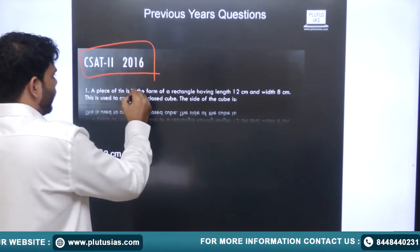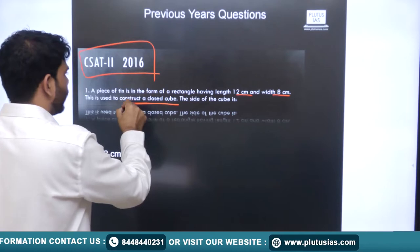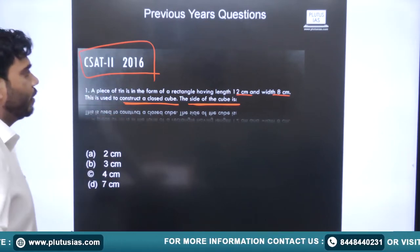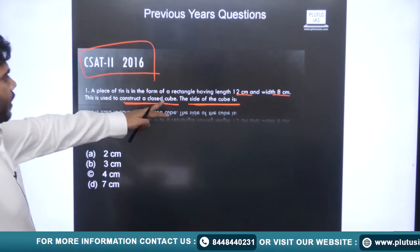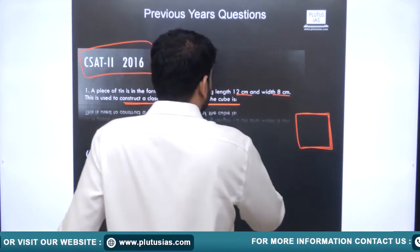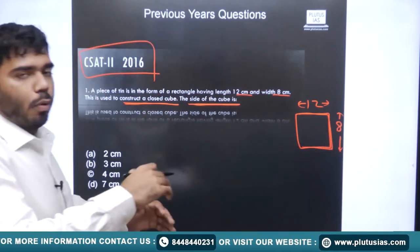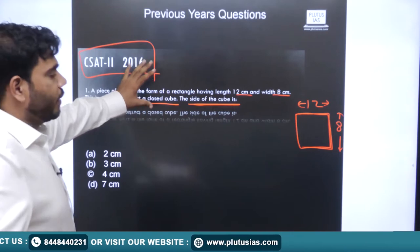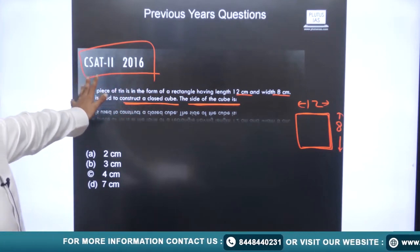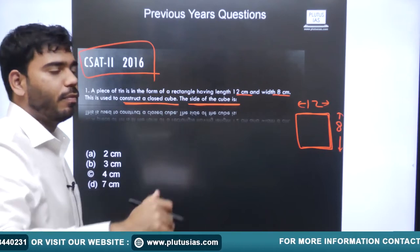The question: a piece of tin is in the form of a rectangle having length 12 cm and width 8 cm. It is used to construct a closed cube. What is the side of the cube? We have a rectangular sheet of tin with dimensions 12×8 cm, and we are molding this 2D sheet into a cube. The question asks for the side length of the cube. Here we will use surface area — the surface area of the tin sheet equals the surface area of the cube formed.